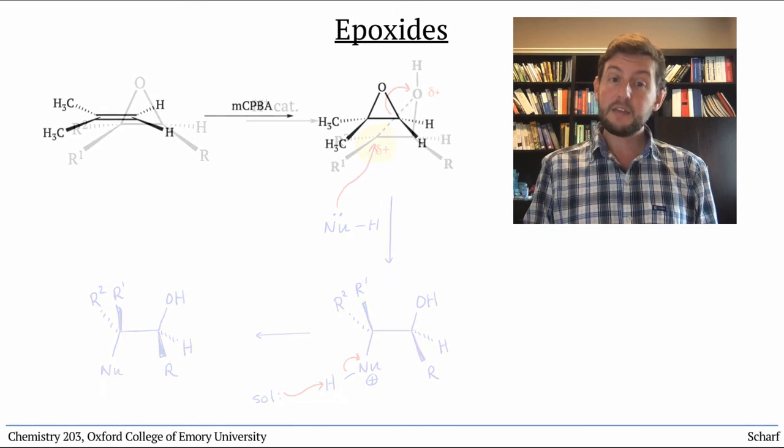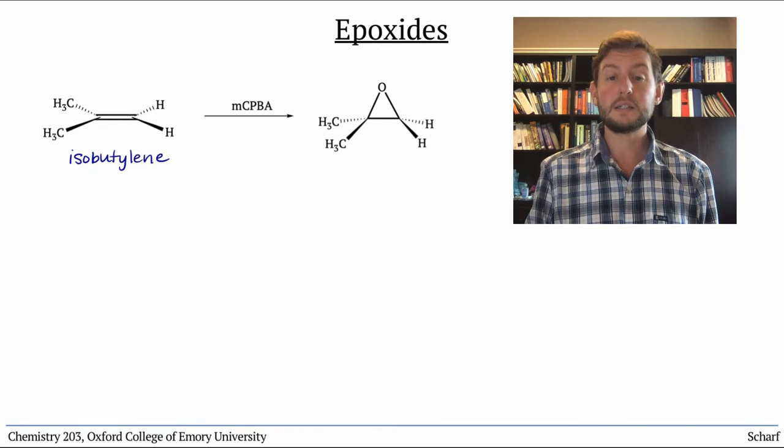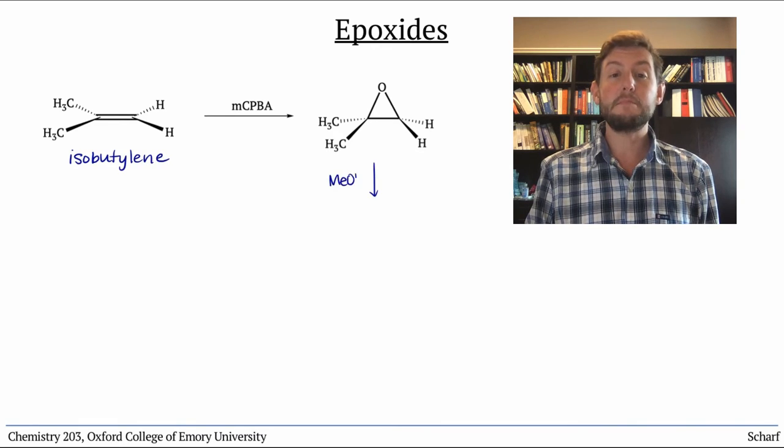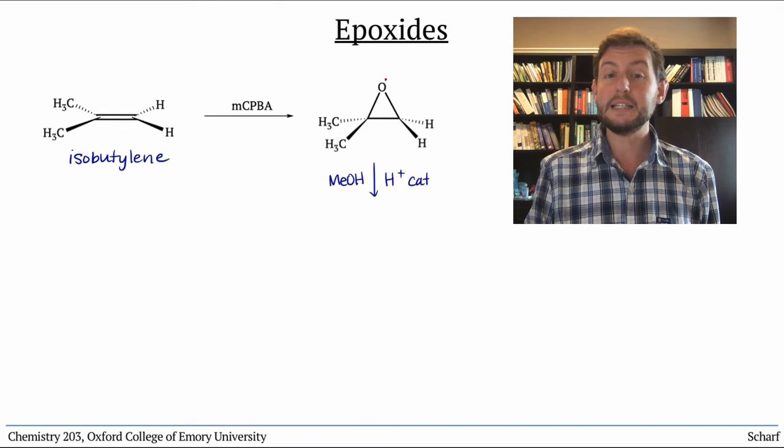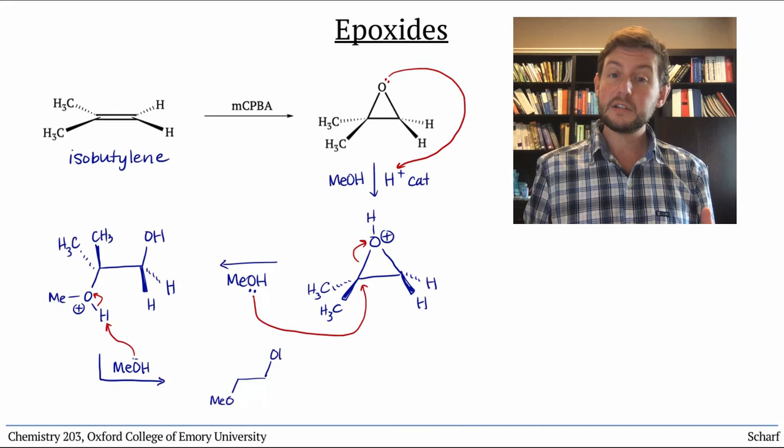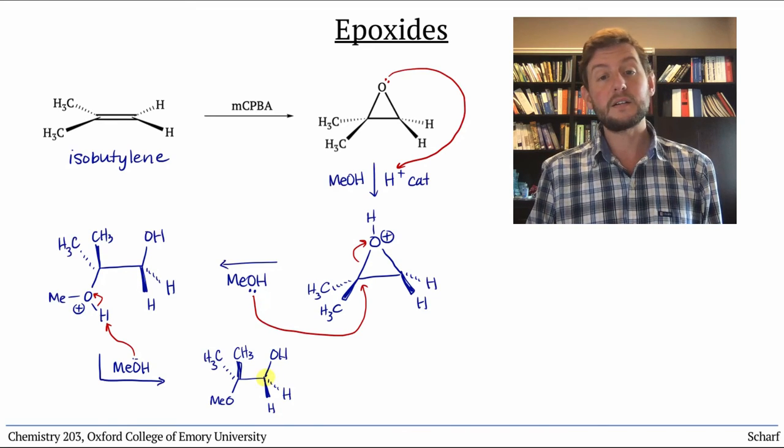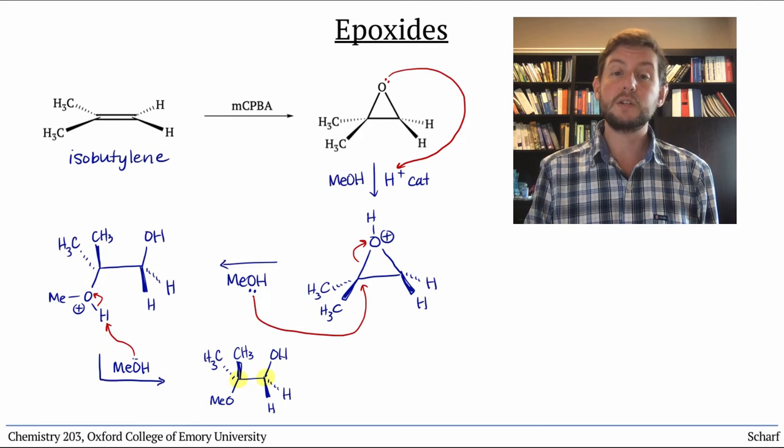So, for instance, if you treat isobutylene with MCPBA to generate isobutylene oxide, and then dissolve it in methanol with a trace of acid catalyst, this reaction occurs, giving the alcohol out here and the methoxy group at the more substituted site.